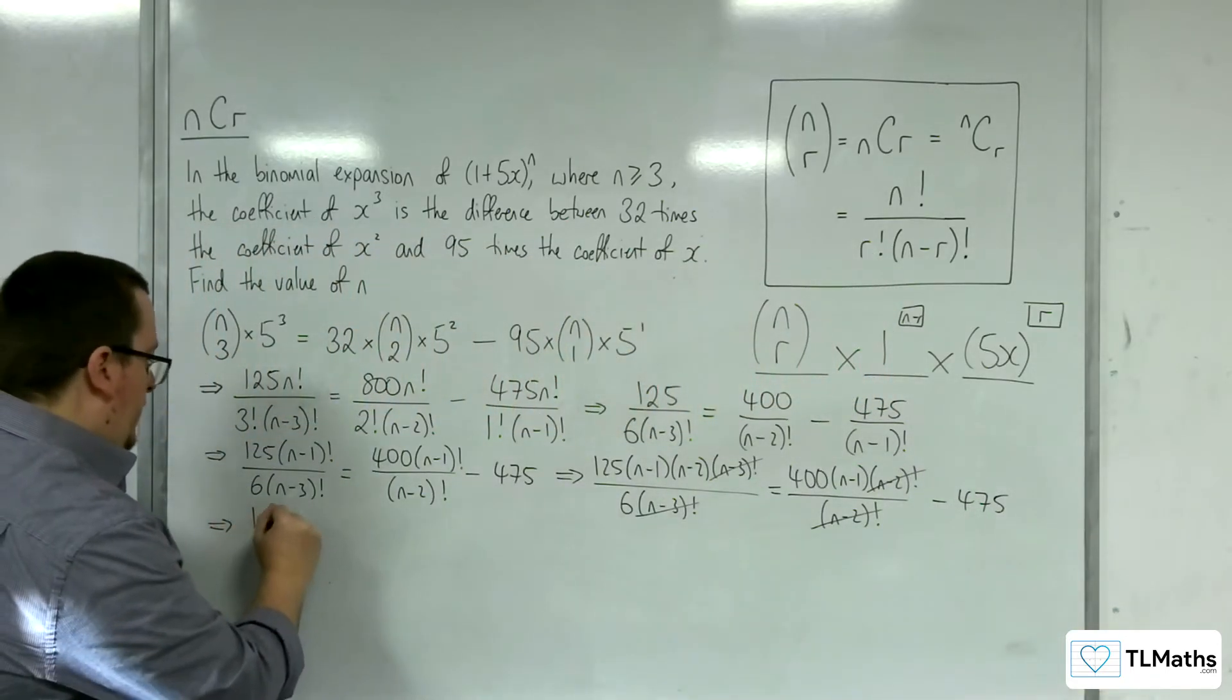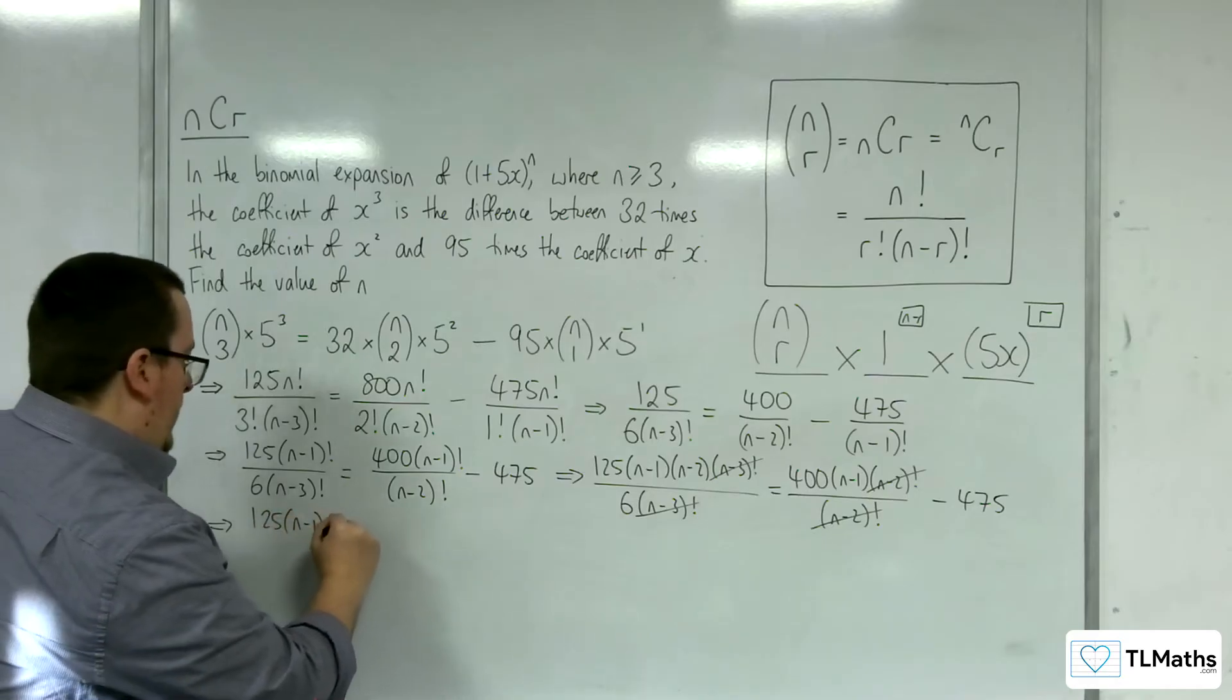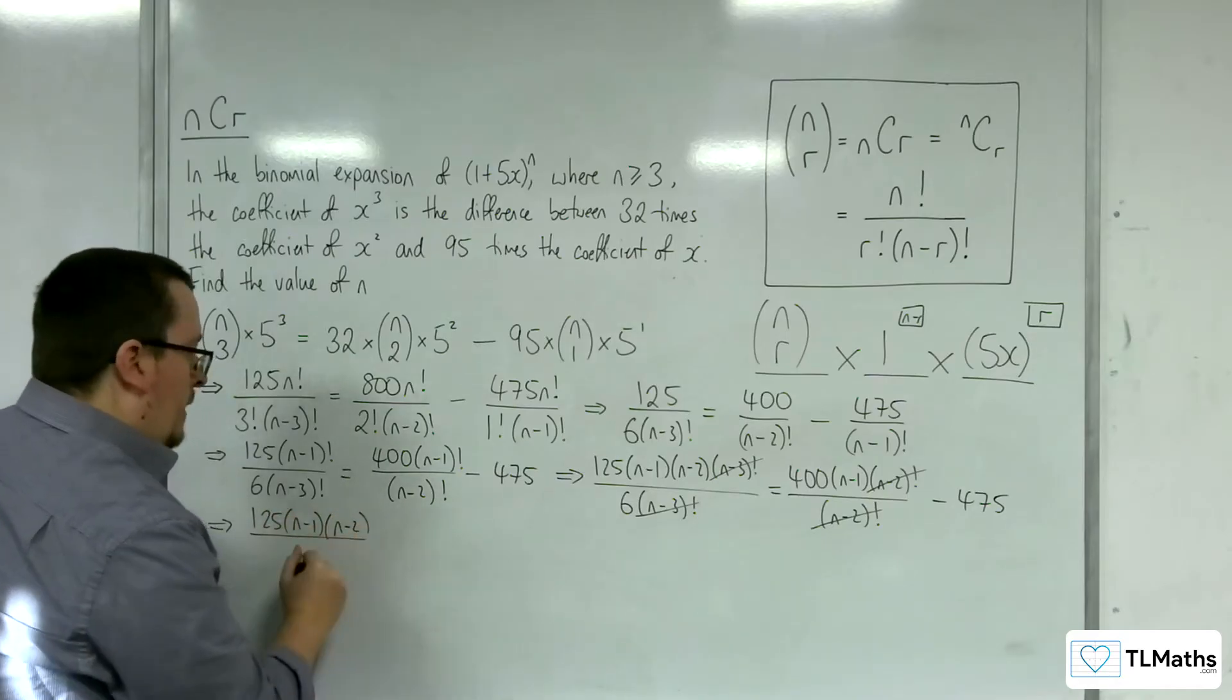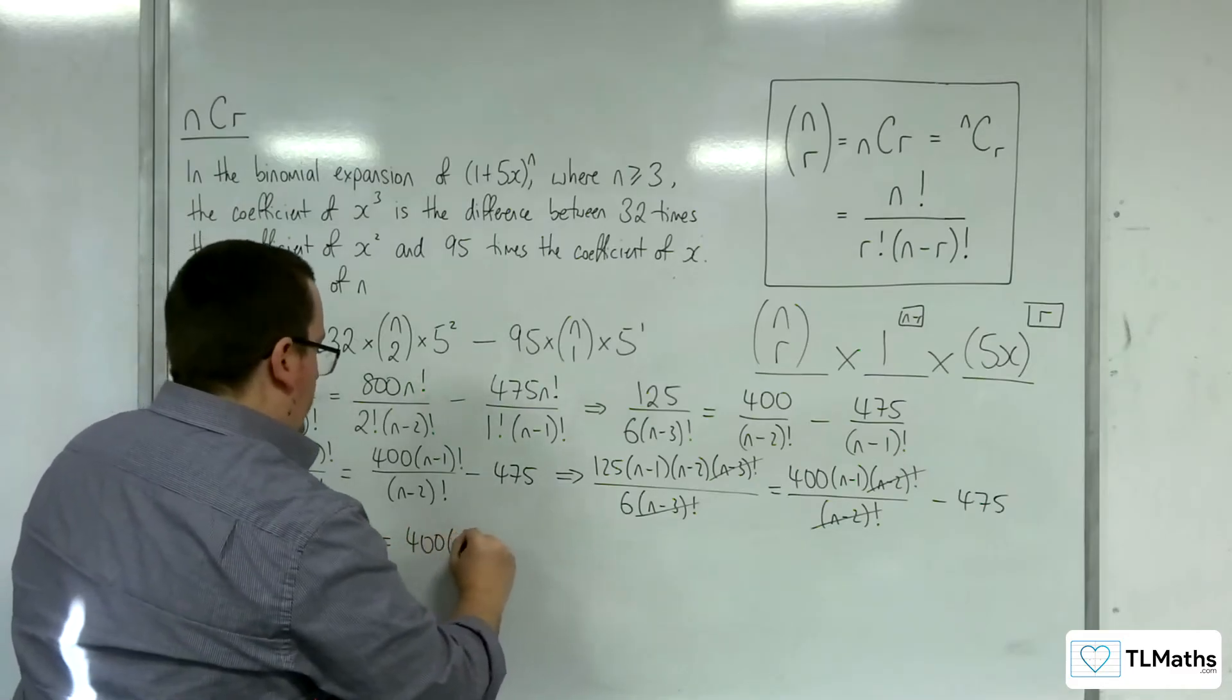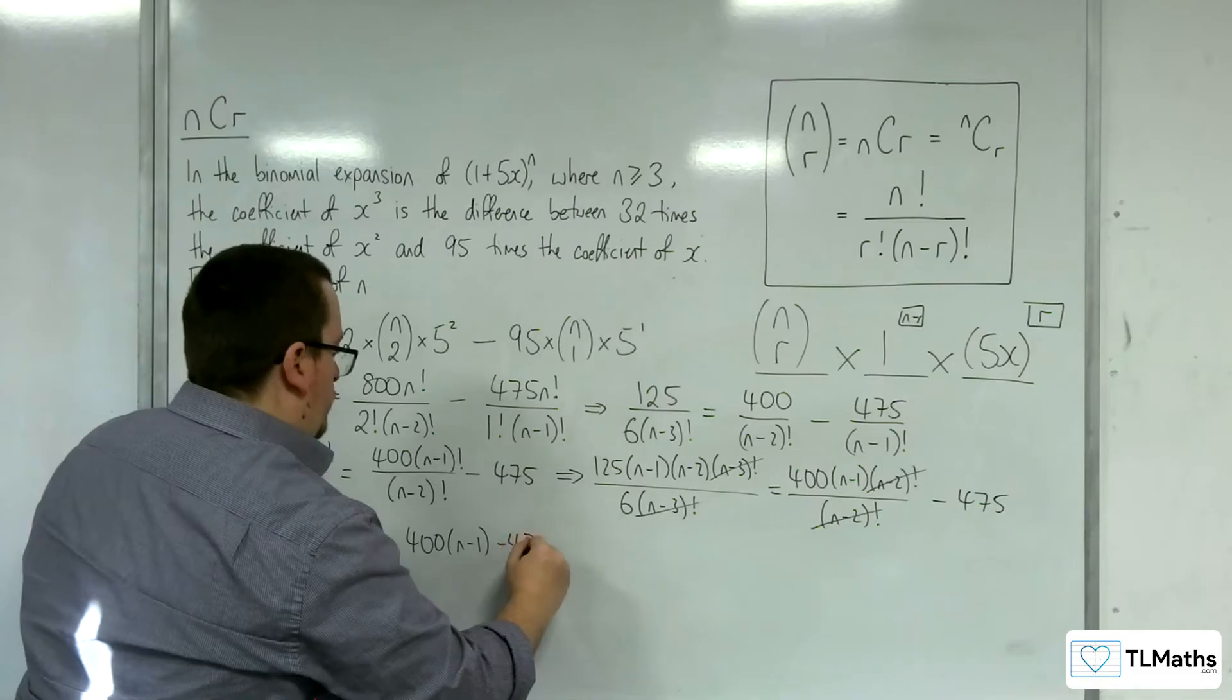So we have 125 n minus 1, n minus 2, over 6 is equal to 400 n minus 1, take away 475.